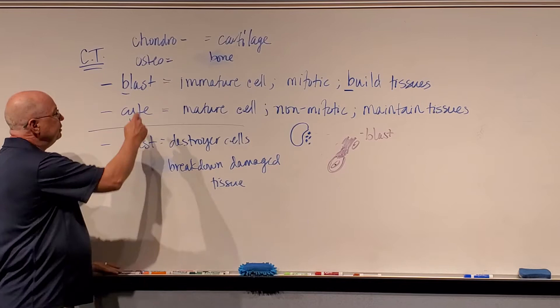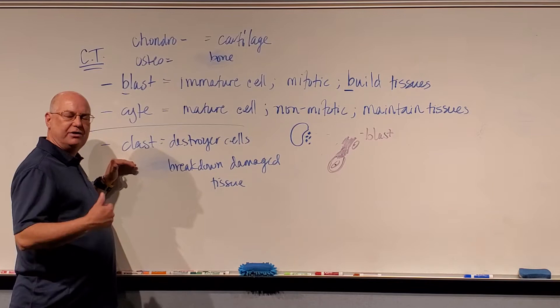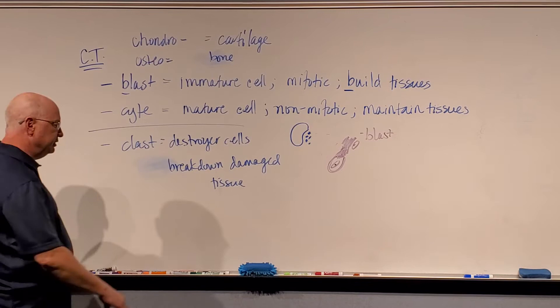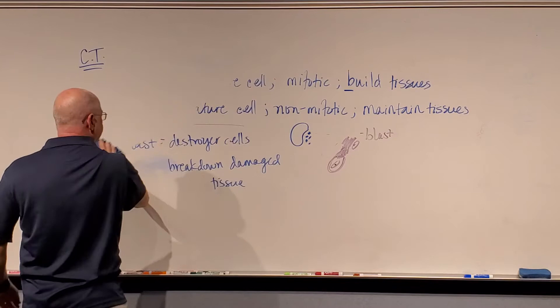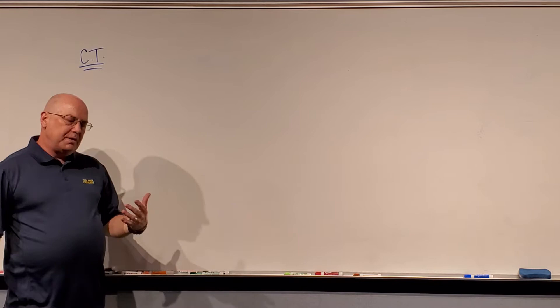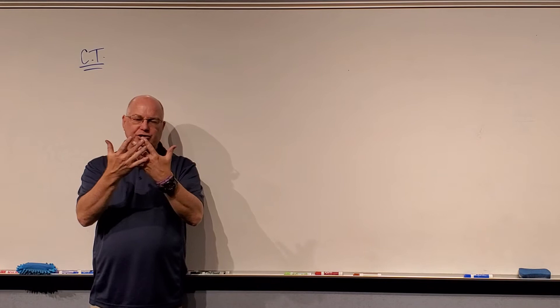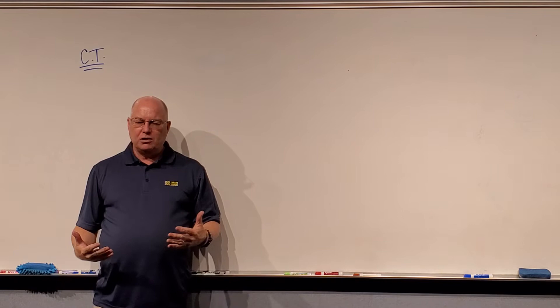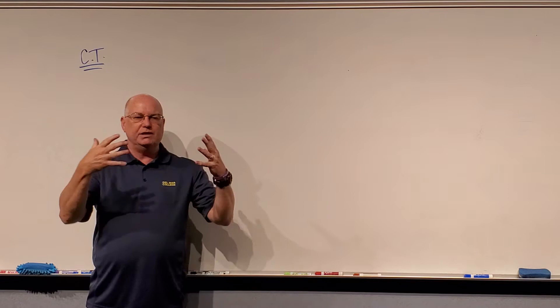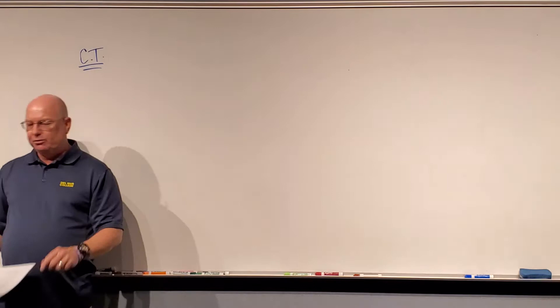You need to know what these suffixes mean. If I talk about a chondroblast or a chondrocyte, an osteoblast or an osteocyte — osteoclasts can not only dissolve bone, they can dissolve cartilage too. Know those three suffixes and what they mean. Now, before I go on to the different types of connective tissues, there's something else to understand. When we talk about connective tissues, there's what's called the matrix — the stuff surrounding the cells within the tissue. In connective tissue proper, it was all the collagen and elastin fibers and the syrupy substance floating around in there.